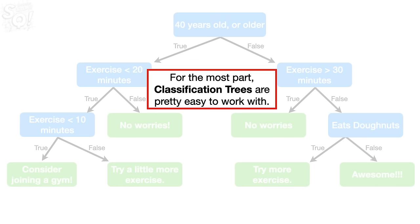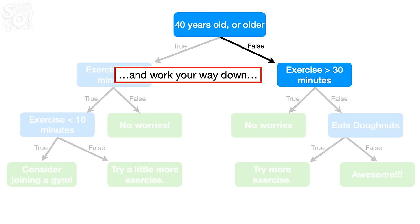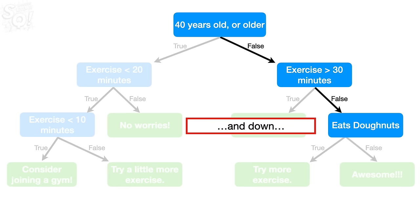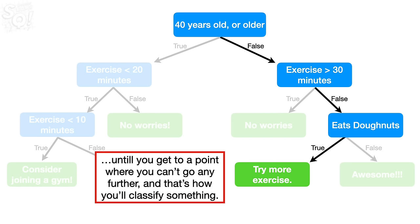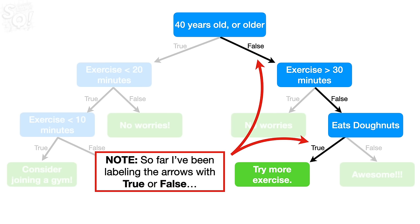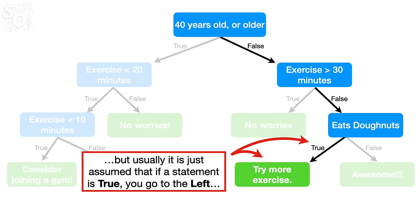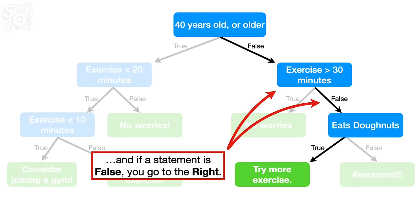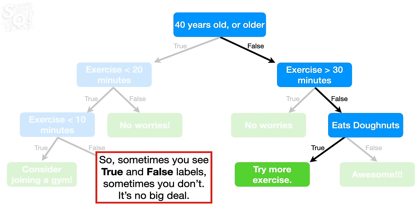For the most part, classification trees are pretty easy to work with. You start at the top and work your way down until you get to a point where you can't go any further — and that's how you'll classify something. Note: so far I've been labeling the arrows with true or false, but usually it is just assumed that if a statement is true, you go to the left, and if a statement is false, you go to the right. Sometimes you see true and false labels, sometimes you don't.